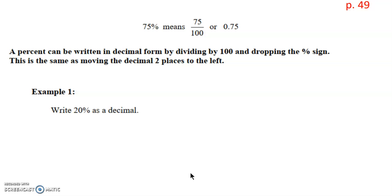We're going to do this with our first example: writing 20% as a decimal. This is 20 over 100, and when we take 20 divided by 100, we get a decimal of 0.2.